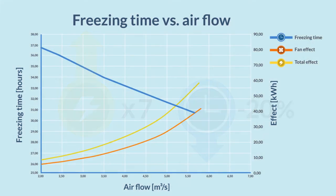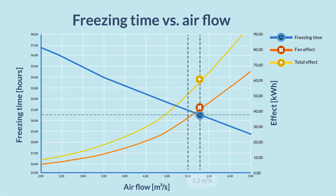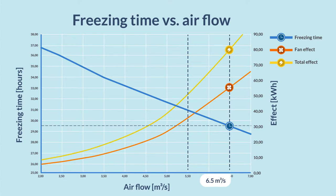Because energy consumption increases exponentially, these figures can become even more alarming when focusing on a reduction. For example, 31 hours at 5.5 cubic meters per second to 29.5 hours at 6.5 cubic meters per second. Here, the energy consumption increased by more than half, just to chop an hour and a half off the freezing time. Is this really worth it?